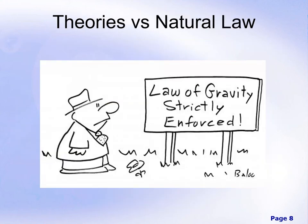We have theories versus natural laws. A natural law is something that holds true at all given times — like the force of gravity, which is considered a natural law. The real difference between a theory and a natural law is that area of doubt: with a theory, there's still a possibility it may be proven wrong in the future with further investigation or different scientific investigative techniques. A natural law, on the other hand, is going to be the same no matter what — forever.